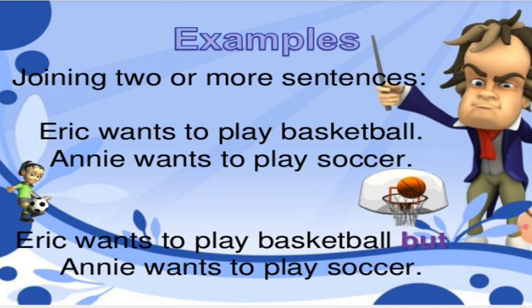Now when does it join two or more sentences? Let us see the example. Eric wants to play basketball. Annie wants to play soccer. We find here two independent sentences and we are joining these by the conjunction BUT: Eric wants to play basketball, BUT Annie wants to play soccer.